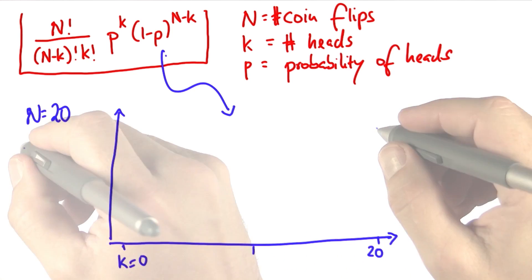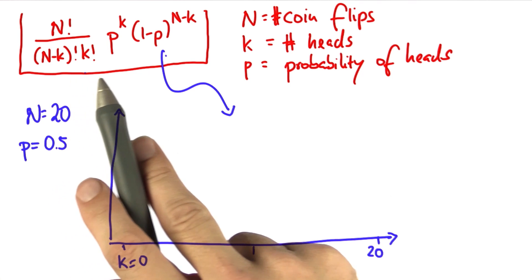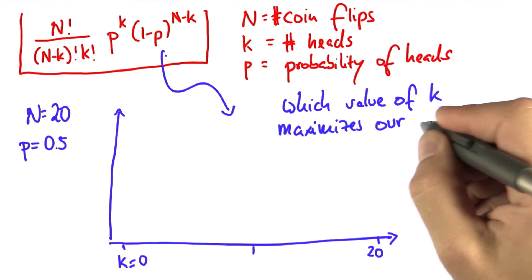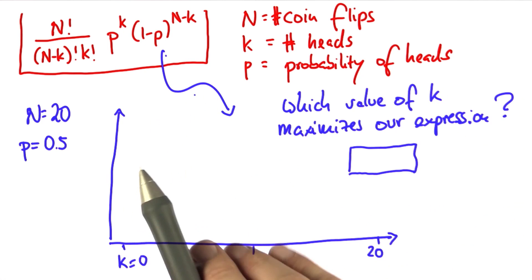Suppose we have a fair coin. Where do you think this value takes on its maximum value? Which value of k maximizes our expression? I know you can't really know this, but with some thought, I believe you'll arrive at the correct answer.